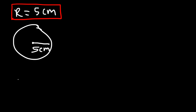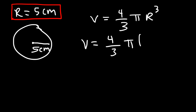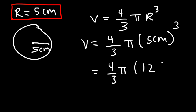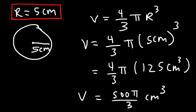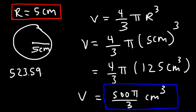Now let's calculate the volume of the sphere. We replace r with 5 centimeters. 5 to the third power: 5 times 5 times 5 is 125. Since we multiplied centimeters three times, we have cubic centimeters. Then 125 times 4 is 500, so the volume is 500 pi over 3 cubic centimeters. The decimal value is approximately 523.599 cubic centimeters.